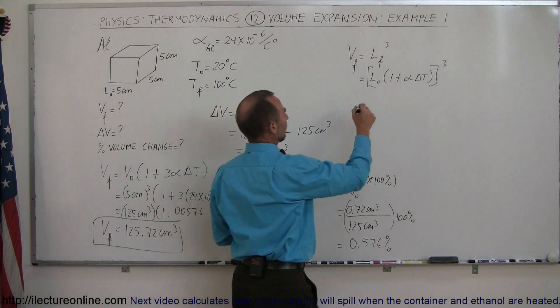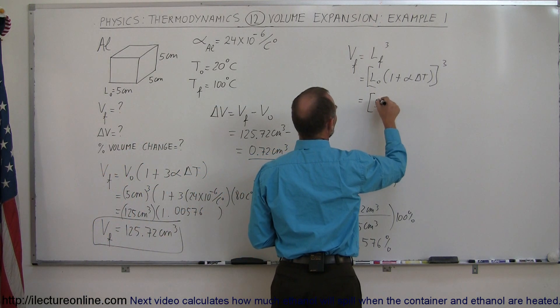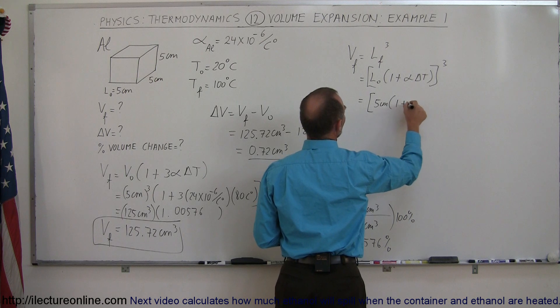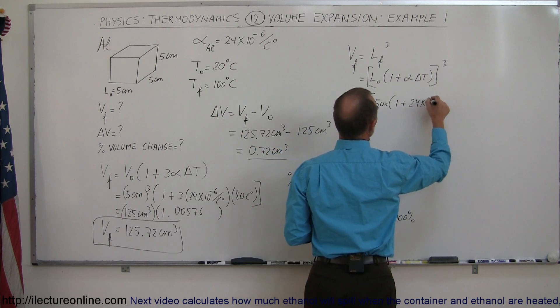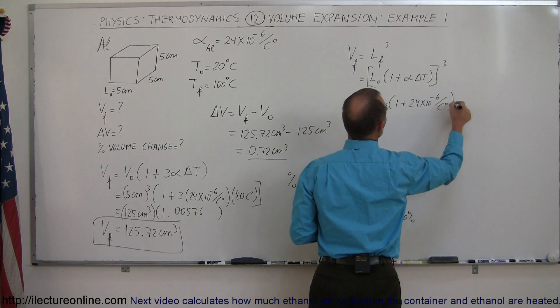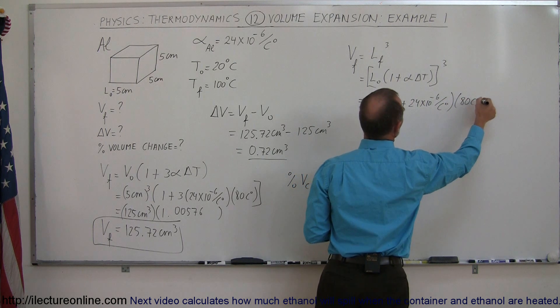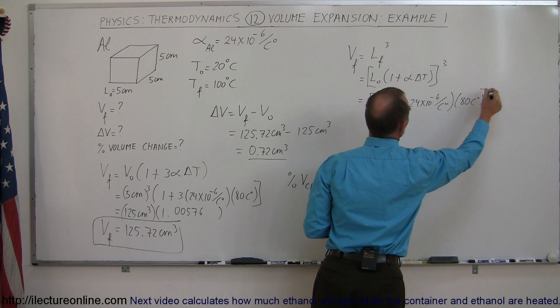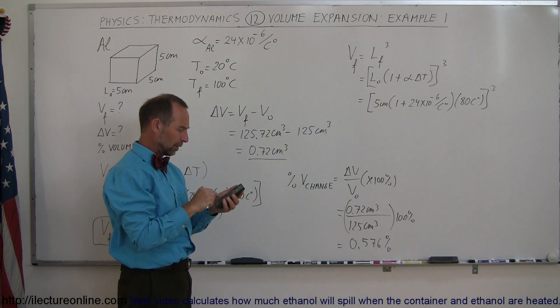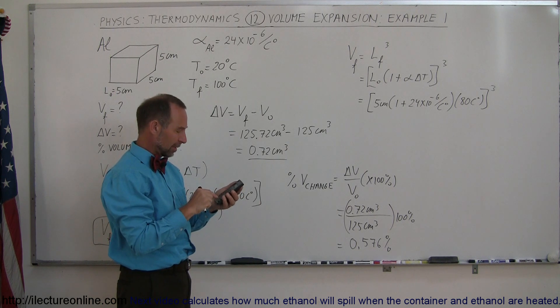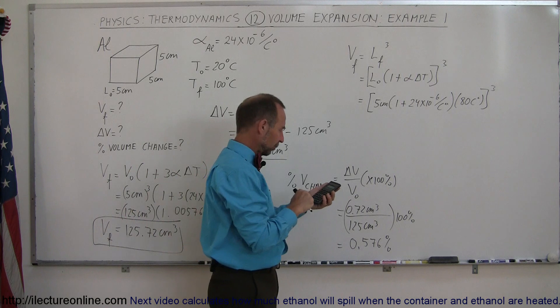All right, this is equal to 5 centimeters times 1 plus the alpha would be 24 times 10 to the minus 6 per centigrade degree times 80 centigrade degrees, like so, and then we cube that quantity right there, let's calculate that.